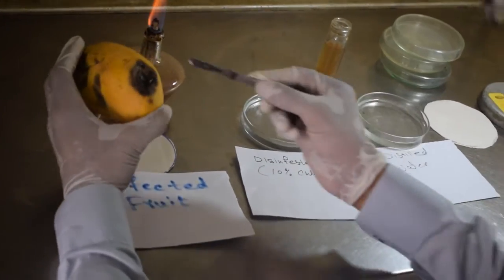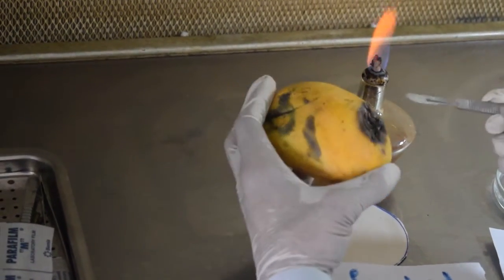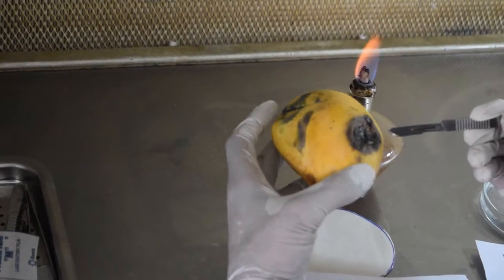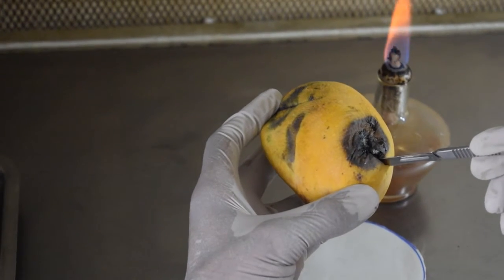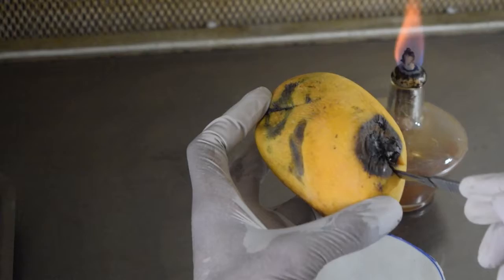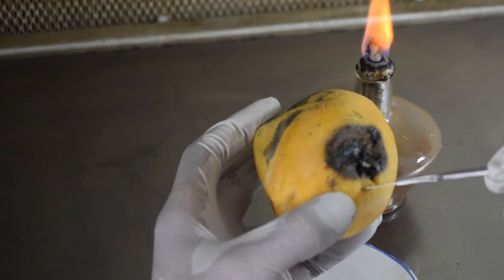You can see here that I already disinfested this infected mango. It is a rotten part, basically, and I am cutting it from the edge. We should cut from the edge because we should have some healthy part of the infected mango.